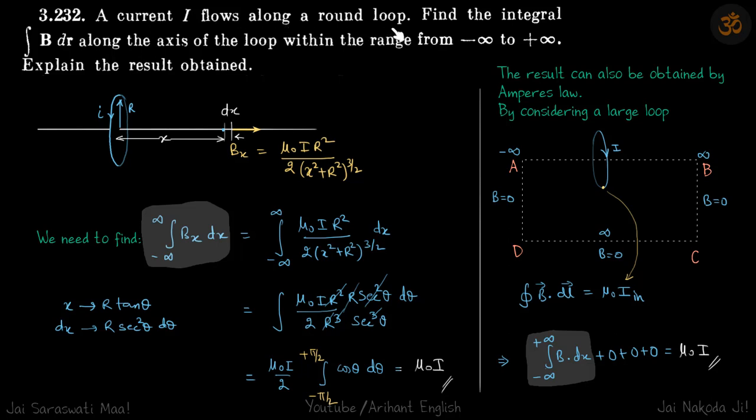A current i flows along a round loop. Find the integral B dot dr along the axis of the loop from minus infinity to plus infinity. So this is our loop and this is the axis.